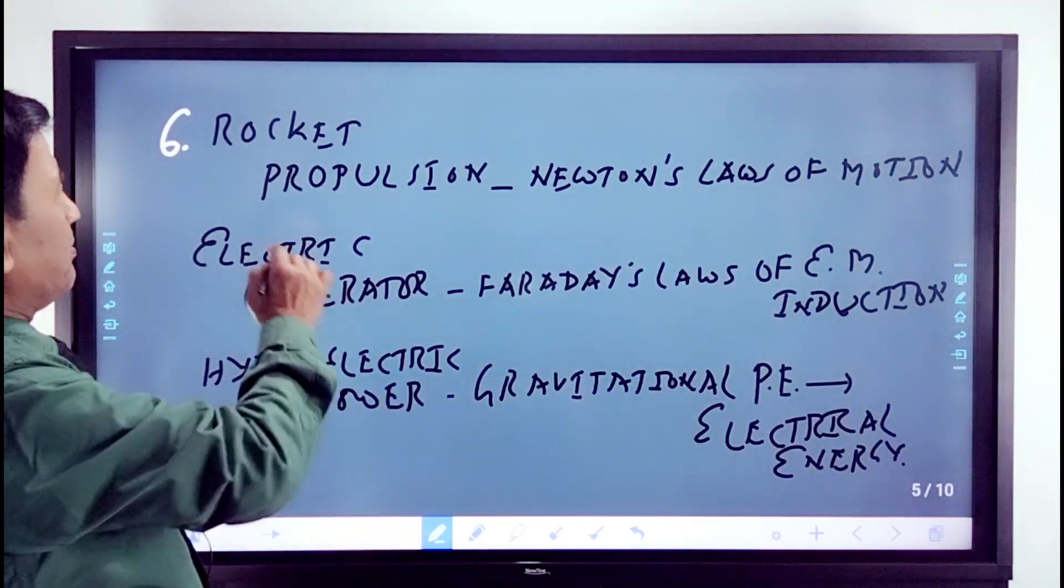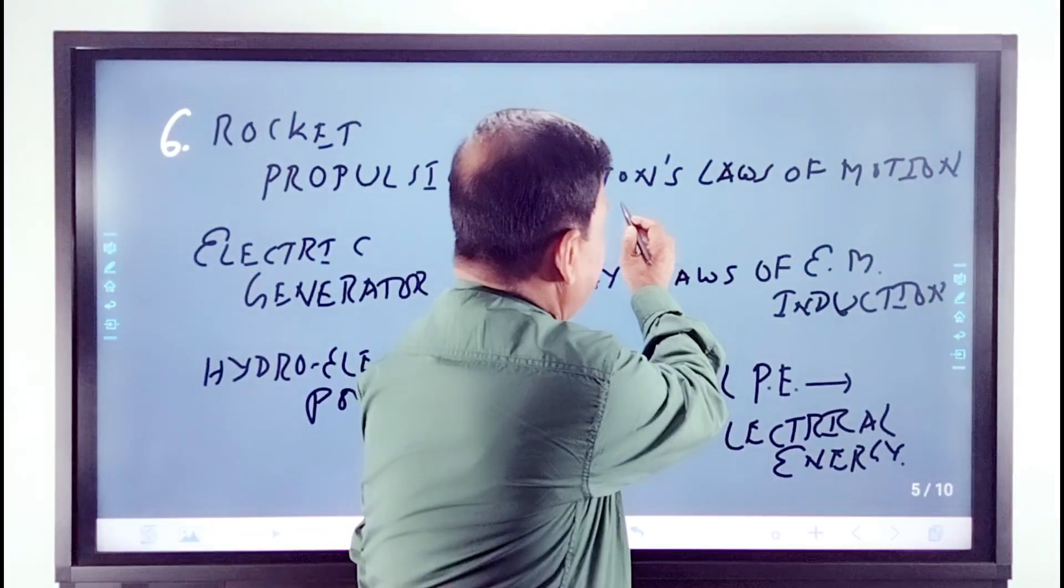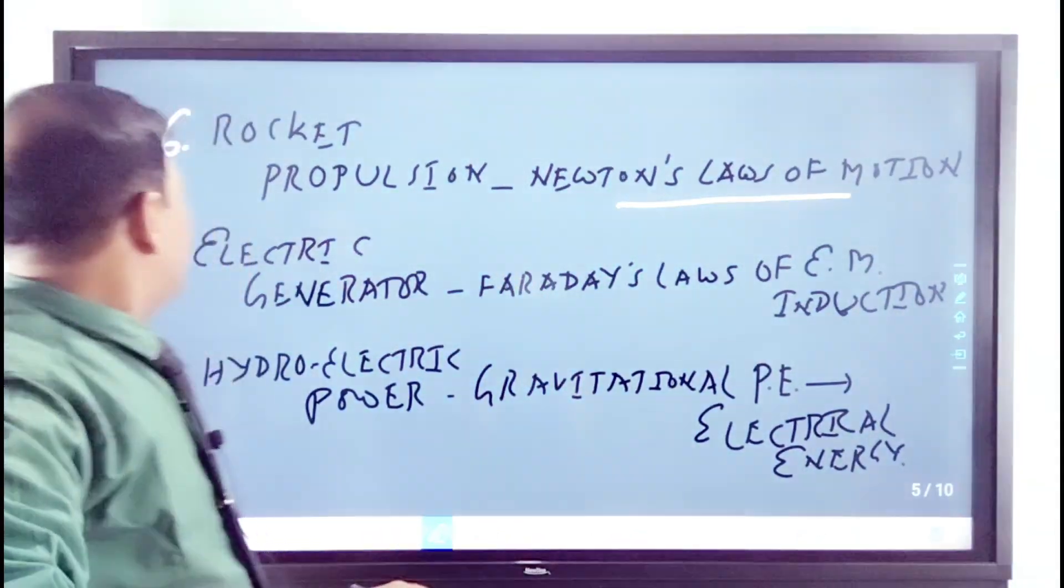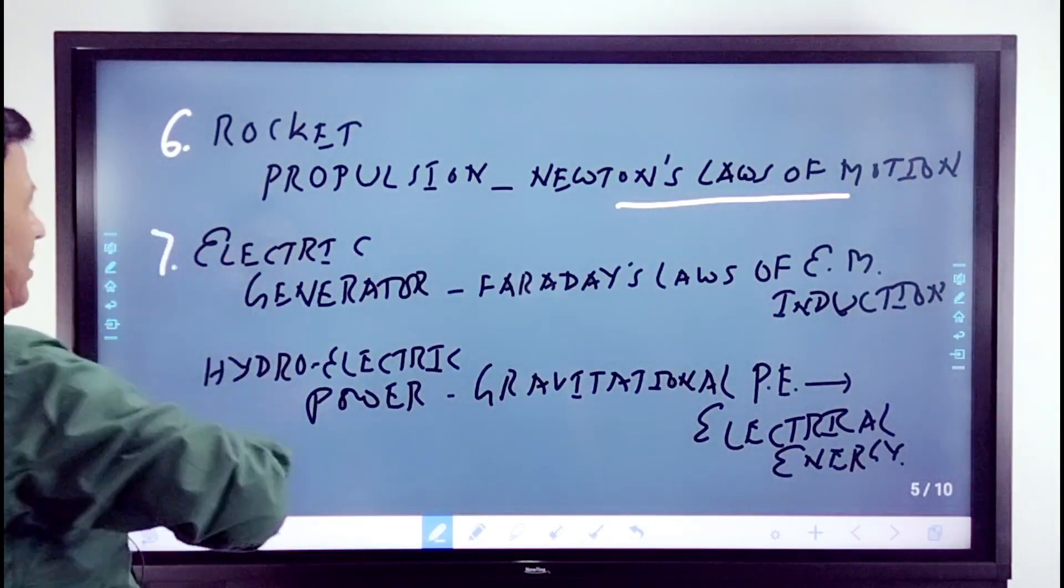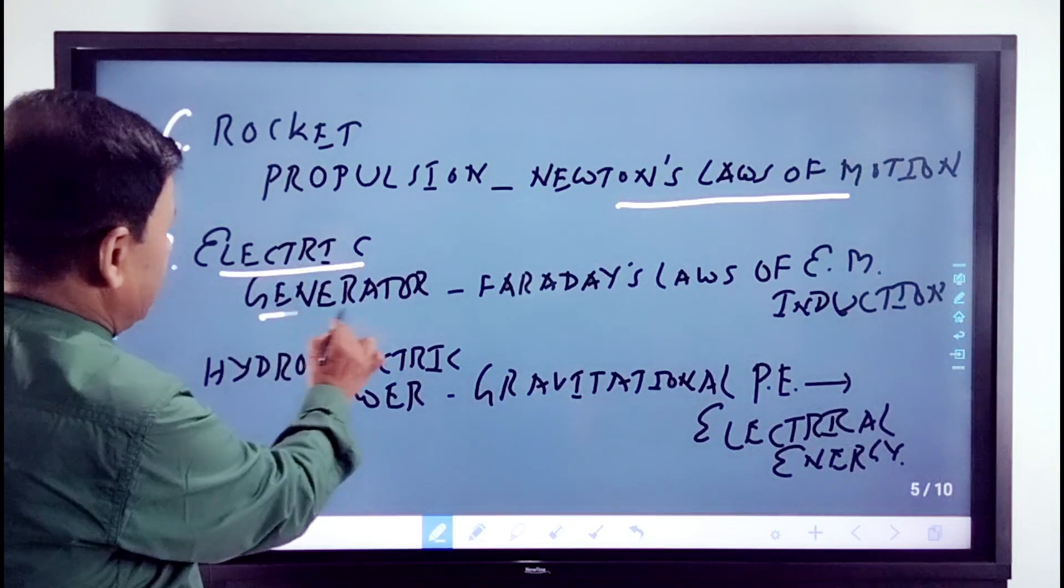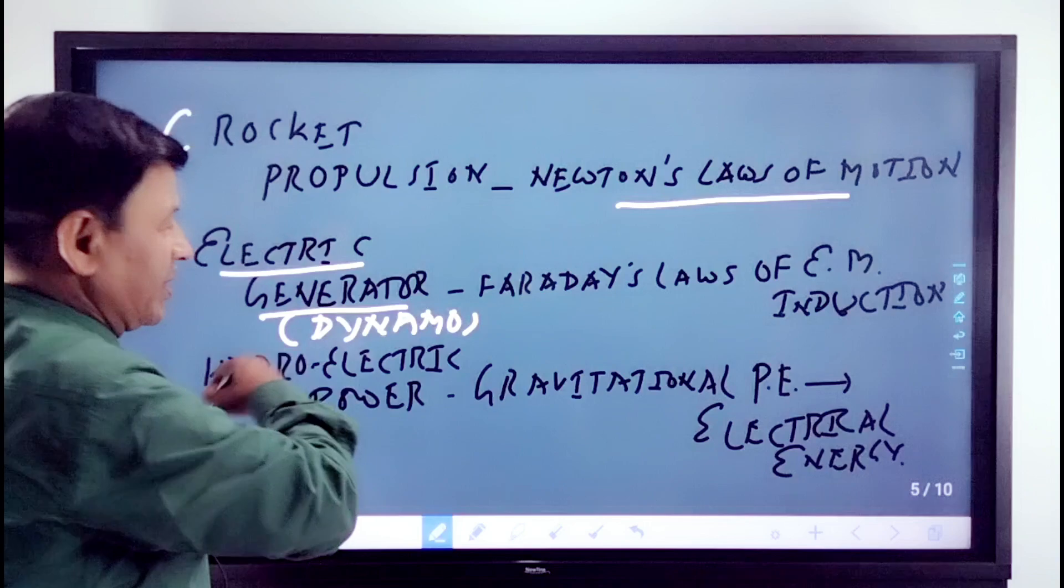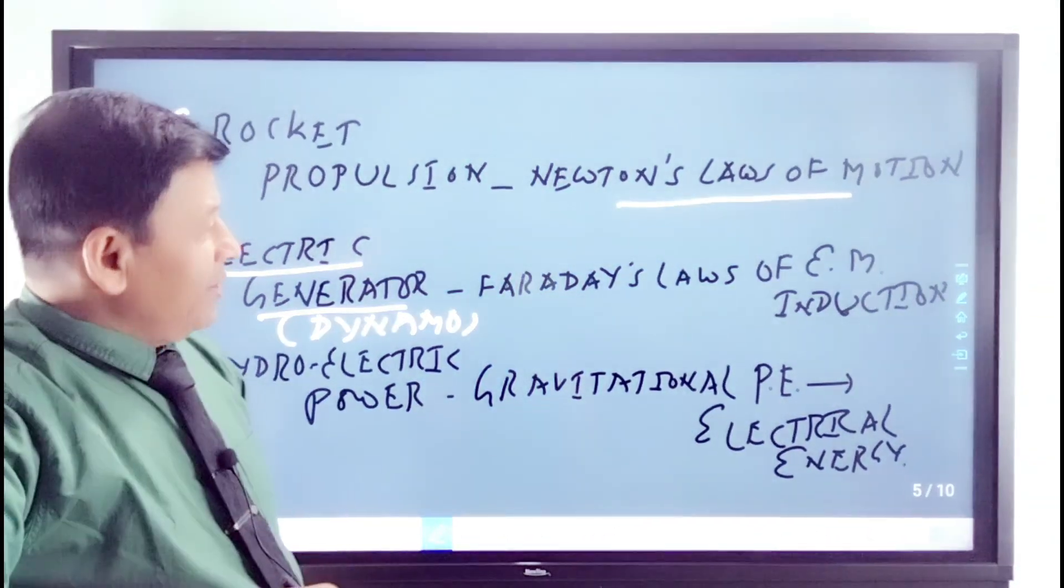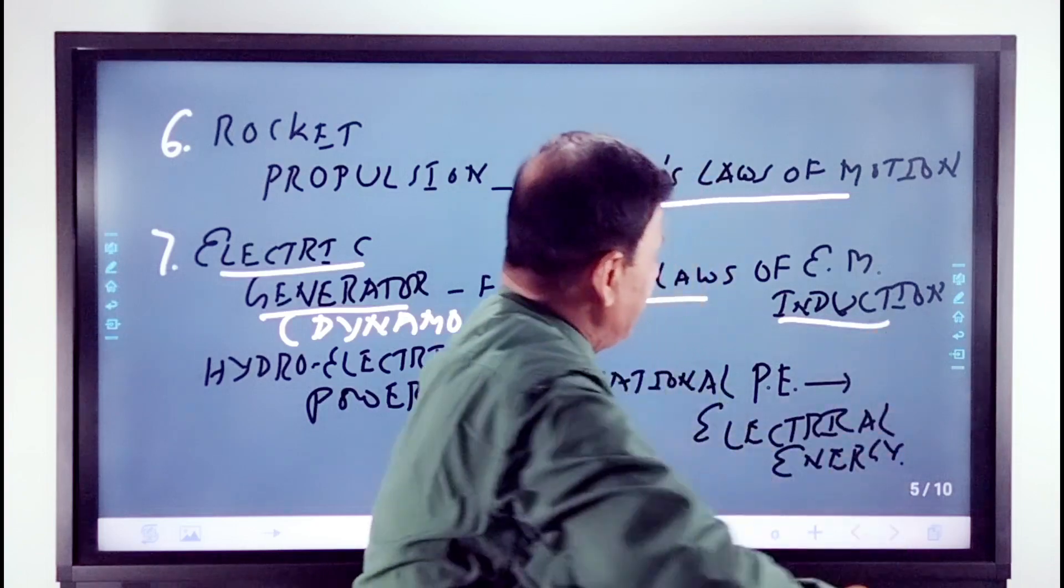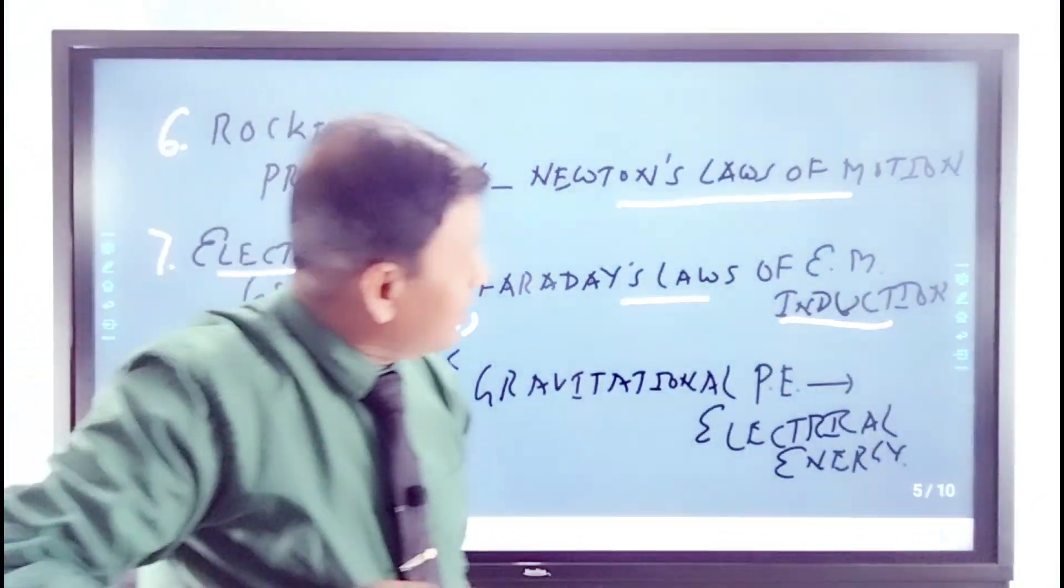Now come to the rocket propulsion. Rocket propulsion, how does it work? Newton's laws of motion. Next, seven: electric generator. Electric generator is also known as dynamo. How does it work? Faraday's law of EM induction, electromagnetic induction.